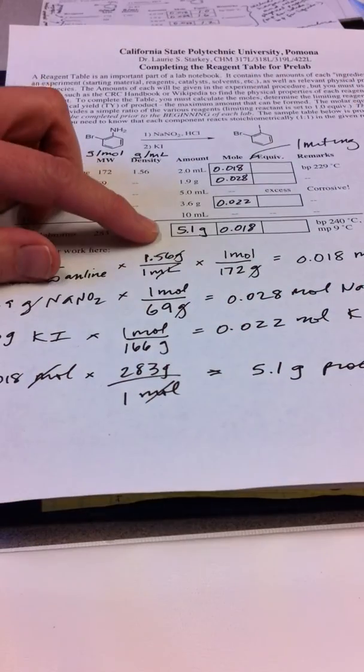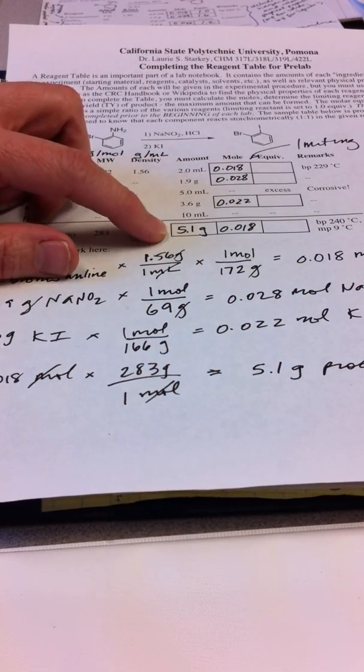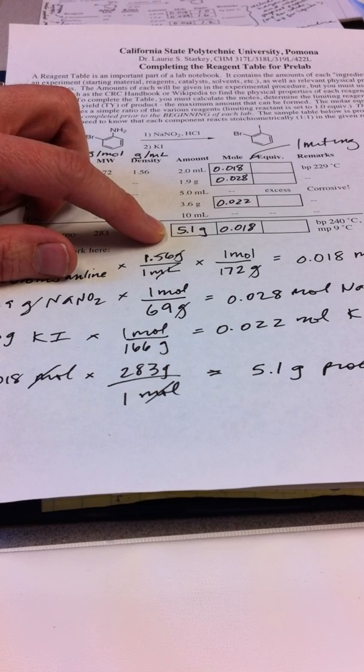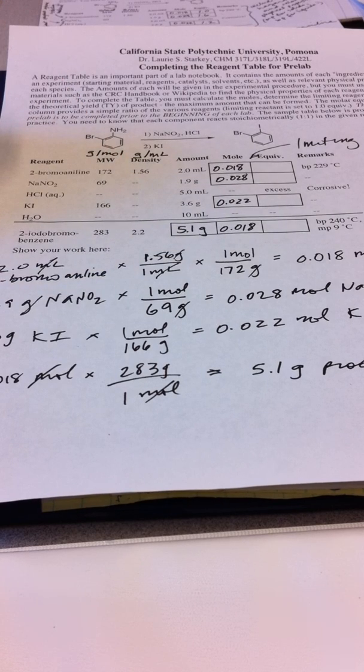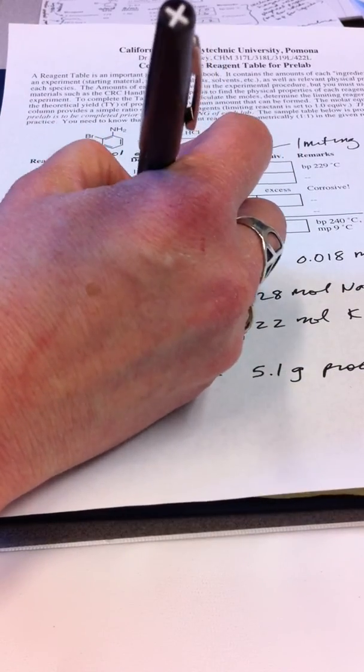I'm going to be sure to include my units because this column can be any number of units. So it's 5.1 grams sticking to my two significant figures. And so that's how we could calculate our theoretical yield. What goes in this box is the theoretical yield.